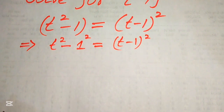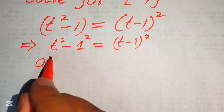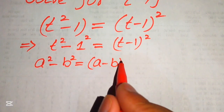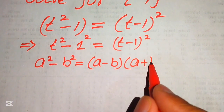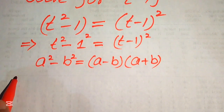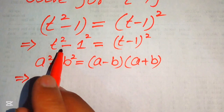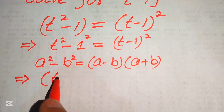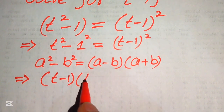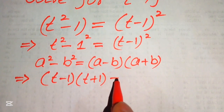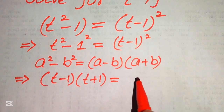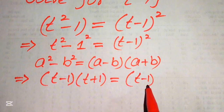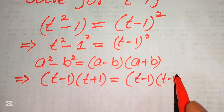Now we use the algebraic formula: a squared minus b squared equals a minus b times a plus b. Applying this to the left hand side, we get t minus 1 times t plus 1 equals t minus 1 whole square, which we write as t minus 1 times t minus 1.